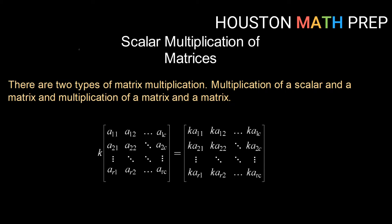So as I mentioned, there are two types. We have multiplication of a number, or what we call a scalar, times a matrix. And then in a future video, we'll talk about how to multiply a matrix and a matrix.